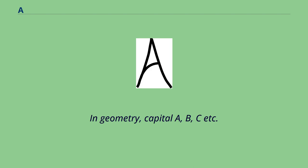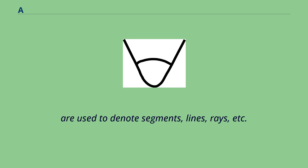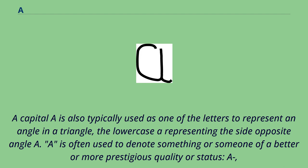In geometry, capital A, B, C, etc. are used to denote segments, lines, rays, etc. A capital A is also typically used as one of the letters to represent an angle in a triangle, the lowercase a representing the side opposite angle A.